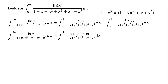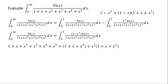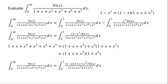We know that 1 minus x⁶ equals (1 minus x) times (1 plus x plus x² plus x³ plus x⁴ plus x⁵), which can be written as (1 plus x plus x²) times (1 plus x³). So the original integral can now be written as the integral from 0 to 1 of (1 minus x) times (1 plus x plus x²) times ln(x) over (1 plus x plus x²) times (1 plus x³), dx.